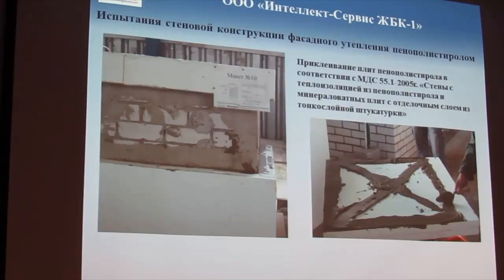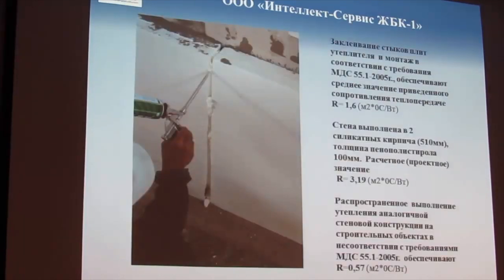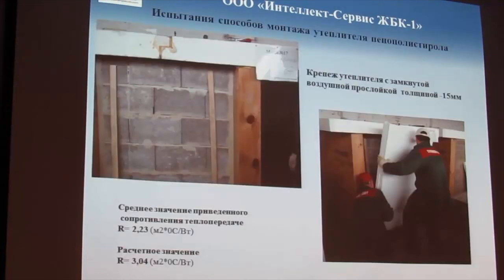Когда мы монтируем обычный утеплитель на конструкцию, делаем два варианта. Первый — приклеиваем к несущей стене, как требует норма. Второй — создаём воздушную прослойку герметичную. Когда приклеили к несущей стене, выходим на проектные расчётные значения. Когда сделали с воздушной прослойкой — начинаются движения воздушных потоков. Мы это испытывали на пятиэтажках при реконструкции. Испытания проводили в натуре, не только на макетах.